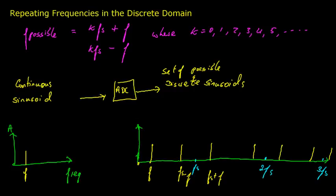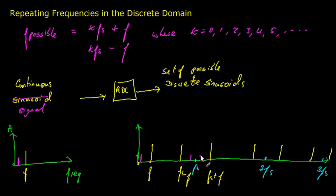Say I had a continuous signal — rather than a single sinusoid — that had two frequency components. Then in the discrete domain, what I'd have are the following possible frequency components. These repeating ones are the repeating versions of the components from the continuous domain. So for more complex signals, you get the same idea, but you'll have more sinusoids in the more complex signal, and each of those sinusoid components will be repeating. Thanks for your attention.